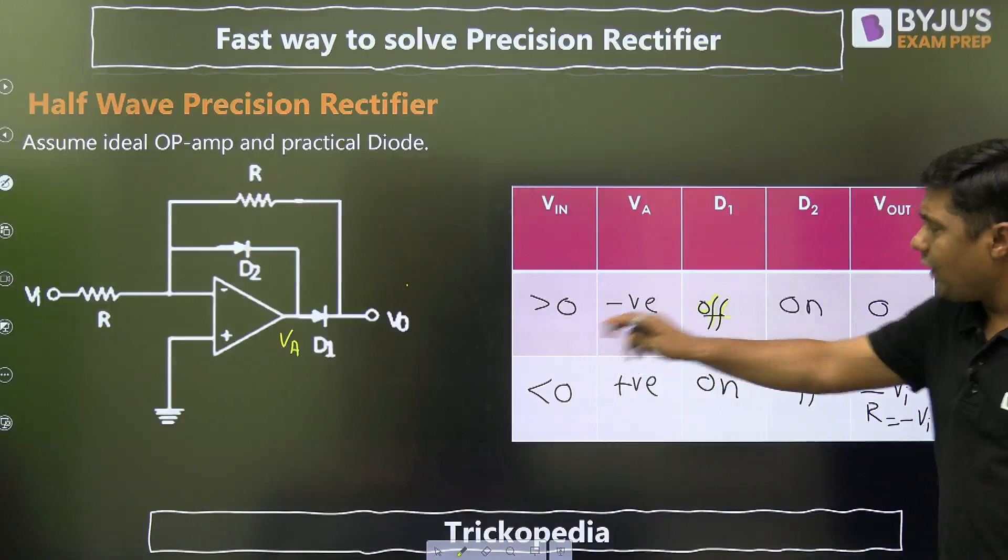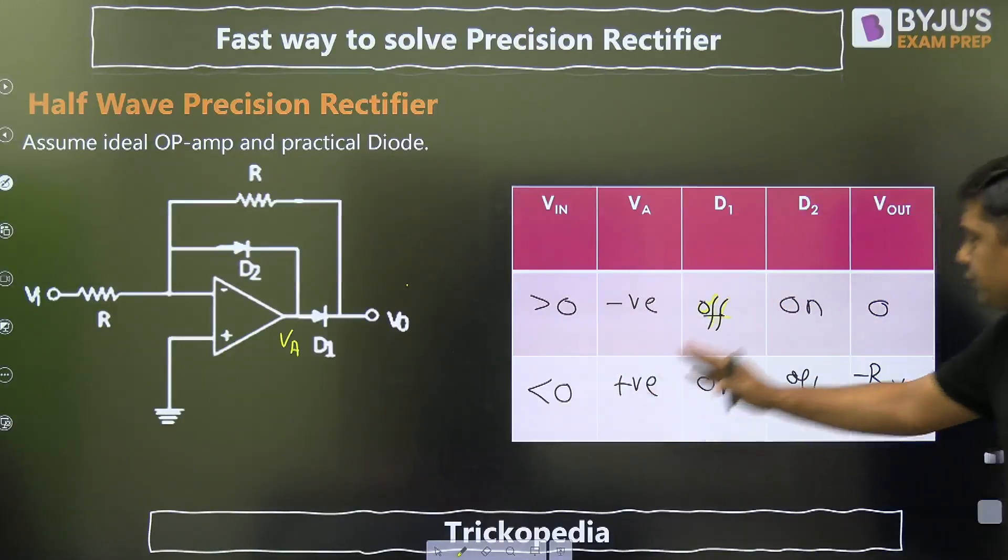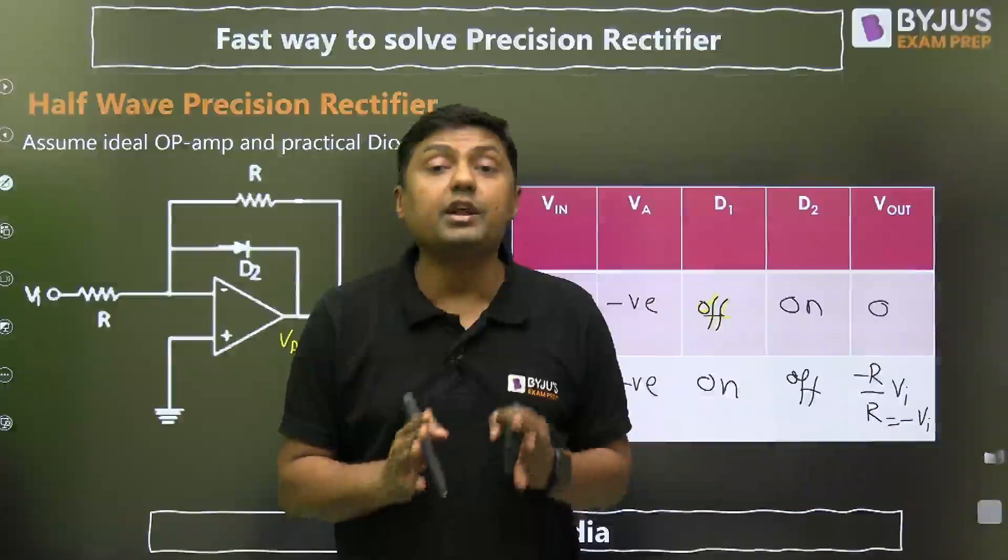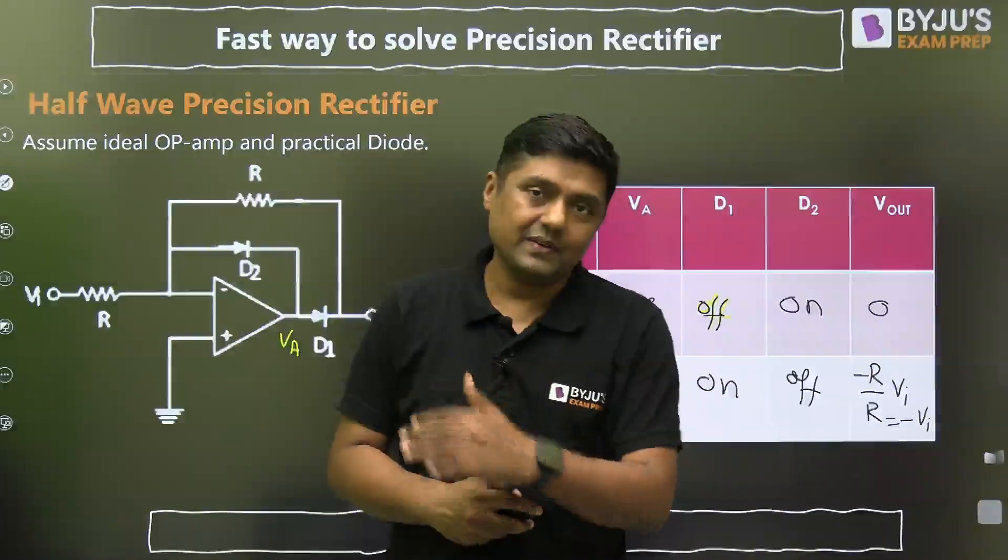Now, for positive half, output is 0. For negative half, we are getting a minus VI with 180 degree phase shift. That is why it is called inverting half-wave rectifier.